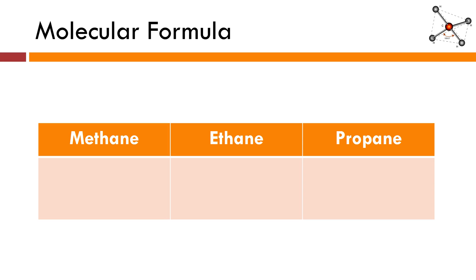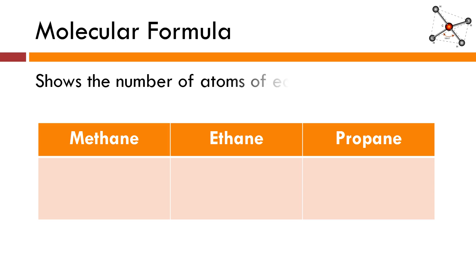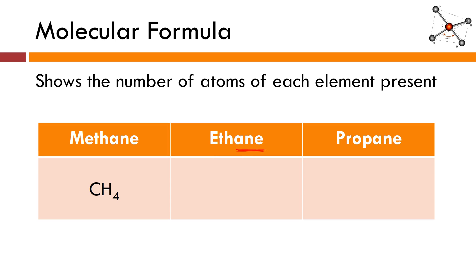I want to look at how to represent our organic compounds using different formulas. We're going to talk about molecular, structural, stereochemical, condensed structural, and something called a skeletal or bond-line formula. A molecular formula shows the number of atoms of each element present in the compound. Methane — the prefix meth means one carbon, so we've got CH4. The prefix eth means two, so ethane has two carbon atoms, ending in -ane, making it an alkane — a saturated hydrocarbon. A single bond between those two carbon atoms, filled with as many hydrogens as possible, gives us C2H6.